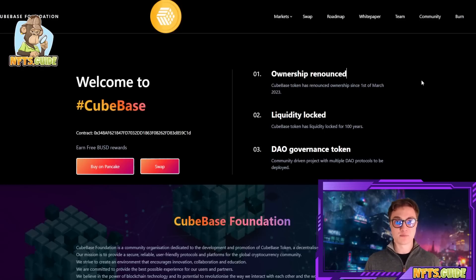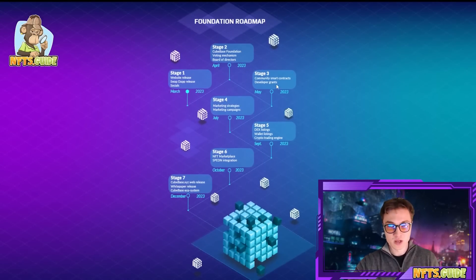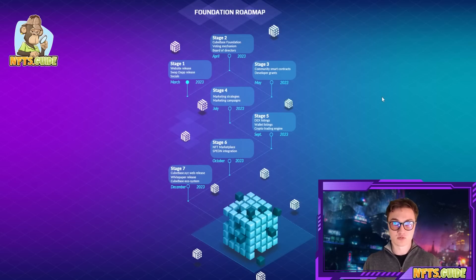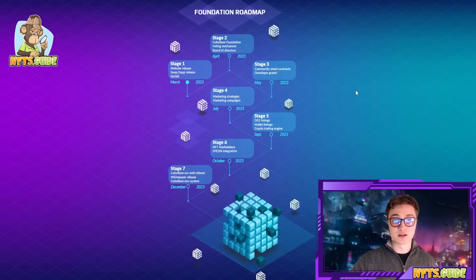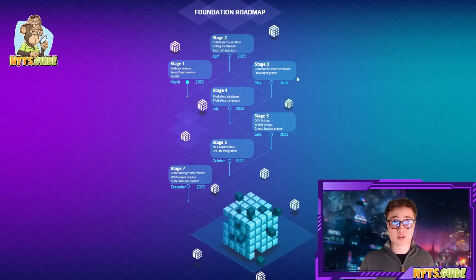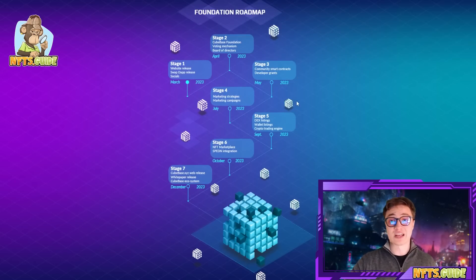They are run and governed by a fantastic team, but as you can see, the ownership is renounced, so this is a fully decentralized and open source community. A little bit about the roadmap: in stage one, all 2023 looking towards the end of this year — the website has been released, the DApp has been released for swapping tokens, socials are out. The Cubase Foundation is coming out, voting mechanism and board of directors being set up, community smart contracts and developer grants in May 2023. In July there will be a lot of marketing, so the time to hop in is right now. Stage five will be DEX listings, wallet listings, a crypto trading engine, NFT marketplace in October 2023, and Spedon integration.